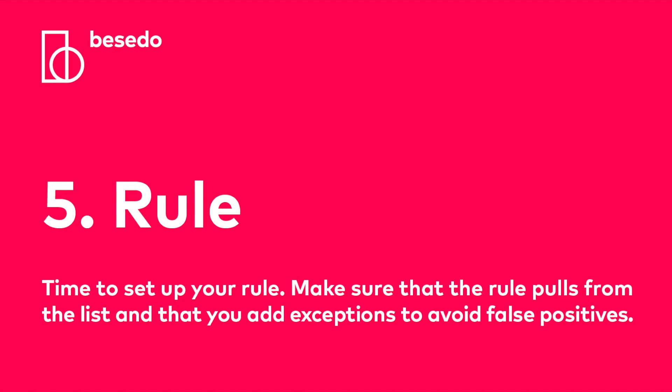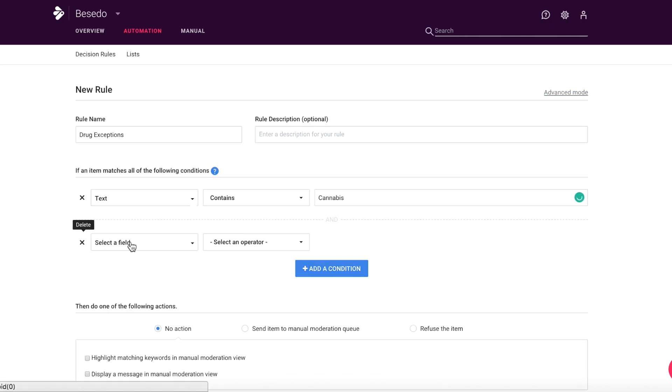Step 5: rule. It's now time to set up your rule. Make sure the rule pulls from the list and that you add exceptions to avoid false positives. For example, as mentioned in step 2, it is legal to sell cannabis seeds in Spain, so in that scenario you need to add 'cannabis + seeds' to the exceptions list. It is at this stage that you have created a filter — congratulations! However, this is basically when the journey towards accuracy and high efficiency begins.